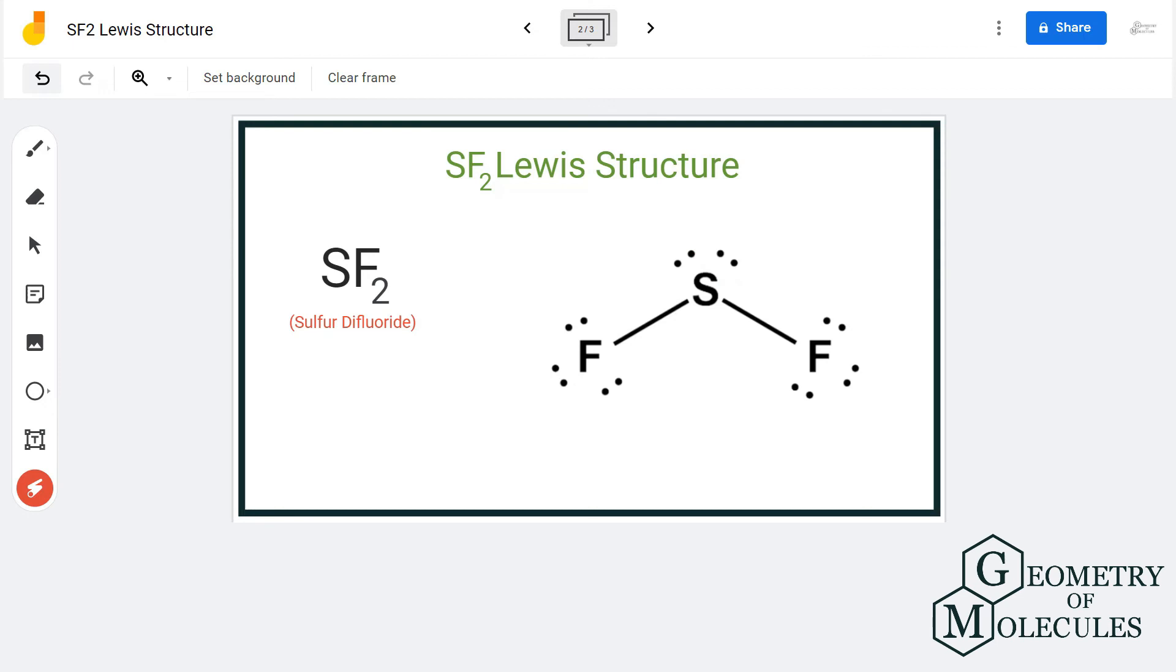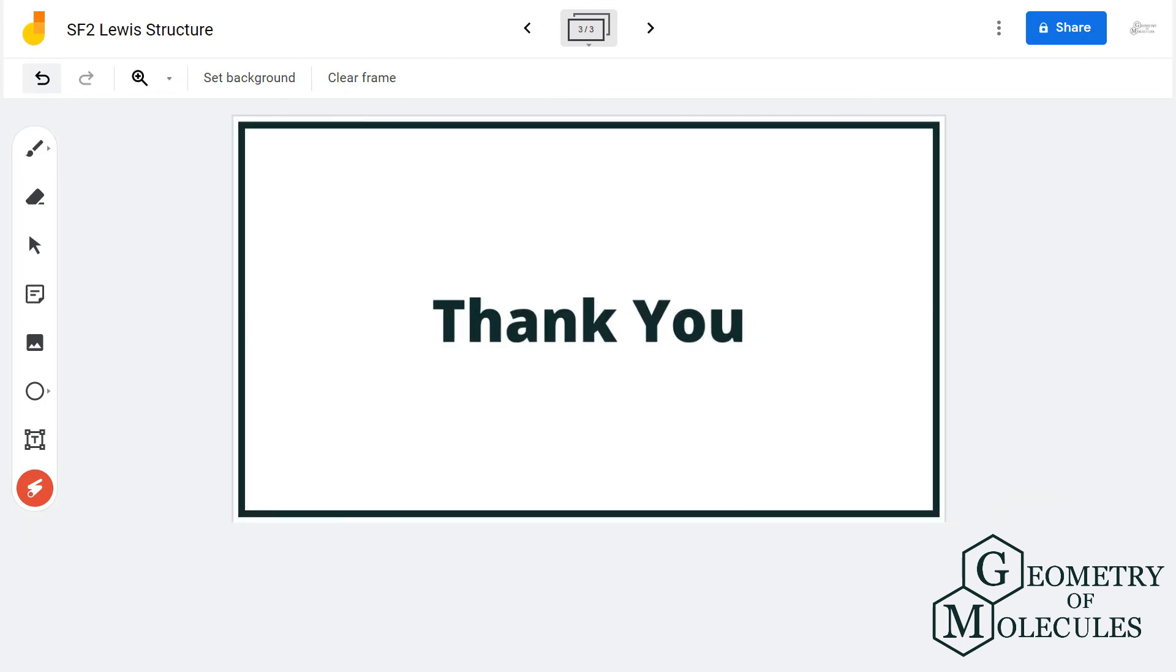Here is the Lewis structure for SF2 in which all the valence electrons are used up and there is a single bond between sulfur and fluorine atoms. For more videos on Lewis structure, molecular geometry, and polarity of molecules, subscribe to our channel. Thank you for watching.